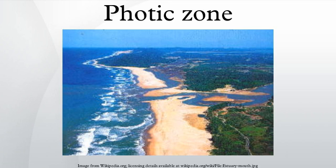The photic zone, euphotic zone, or sunlight zone is the depth of the water in a lake or ocean that is exposed to such intensity of sunlight which designates the compensation point — that is, the intensity of light at which the rate of carbon dioxide uptake, or equivalently the rate of oxygen production, is equal to the rate of carbon dioxide production, equivalently the rate of oxygen consumption, reducing thus the net carbon dioxide assimilation to zero. It extends from the surface down to a depth where light intensity falls to 1% of that at the surface, called the euphotic depth.